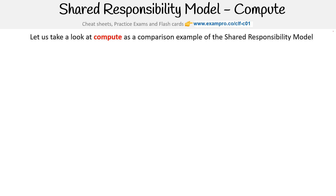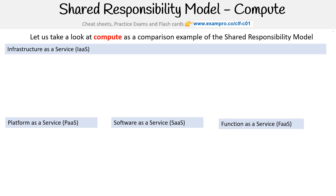What I want to do here is just shift the lens a bit and look at the shared responsibility model if we were just observing a subset of cloud services such as compute. We're going to see infrastructure as a service, platform as a service, software as a service, and now we have function as a service. That's what I mean — when we shift the lens, we get new information.